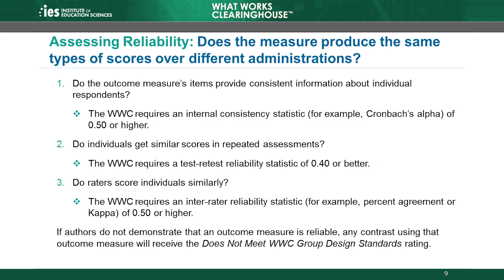The third target represents a measure that has both face validity and reliability, because the results are clustered at the center of the target. There are three ways for an outcome measure to meet the reliability standard. The first way is to offer evidence that the individual items or questions in an outcome measure provide consistent information about a respondent's knowledge, skills, attitudes, or behaviors. This is called internal consistency.